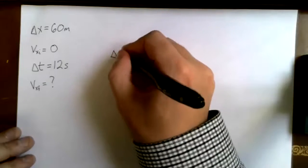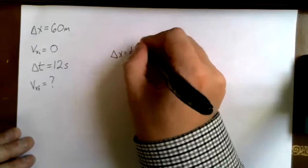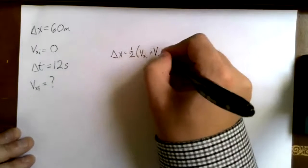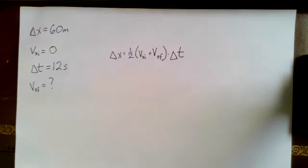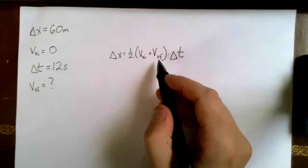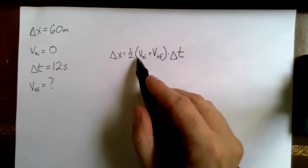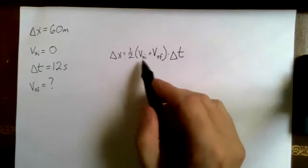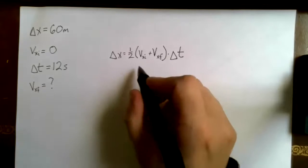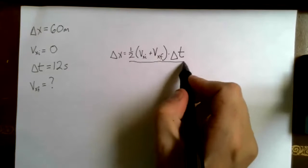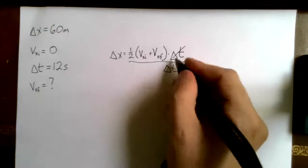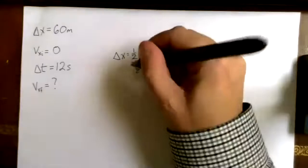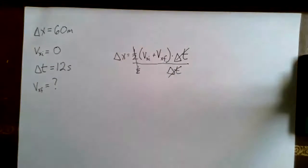We do need to rearrange this to get V_xf by itself. Remember, the first thing to do if our unknown is inside parentheses is to get the parentheses by itself. So what we'll do here first is divide by what's multiplied by the parentheses, so the Δt, so that cancels out, and the one-half.